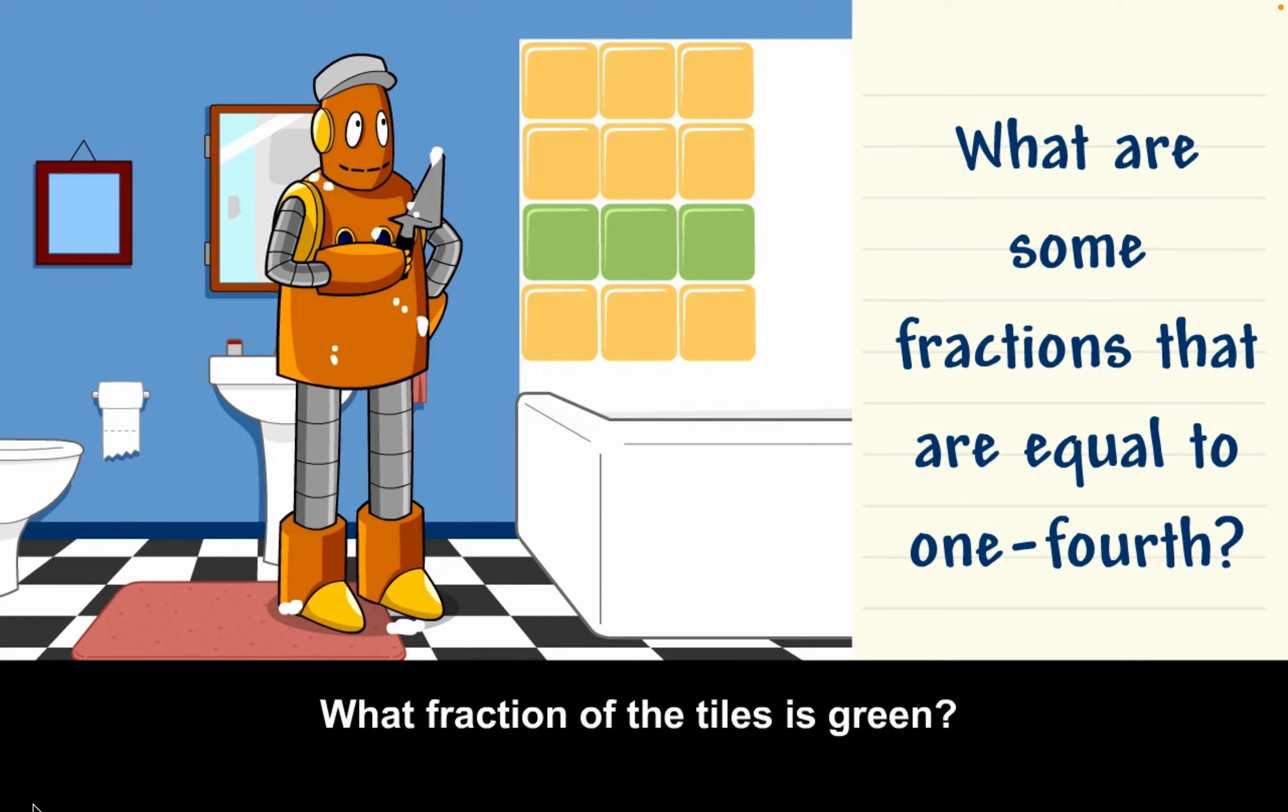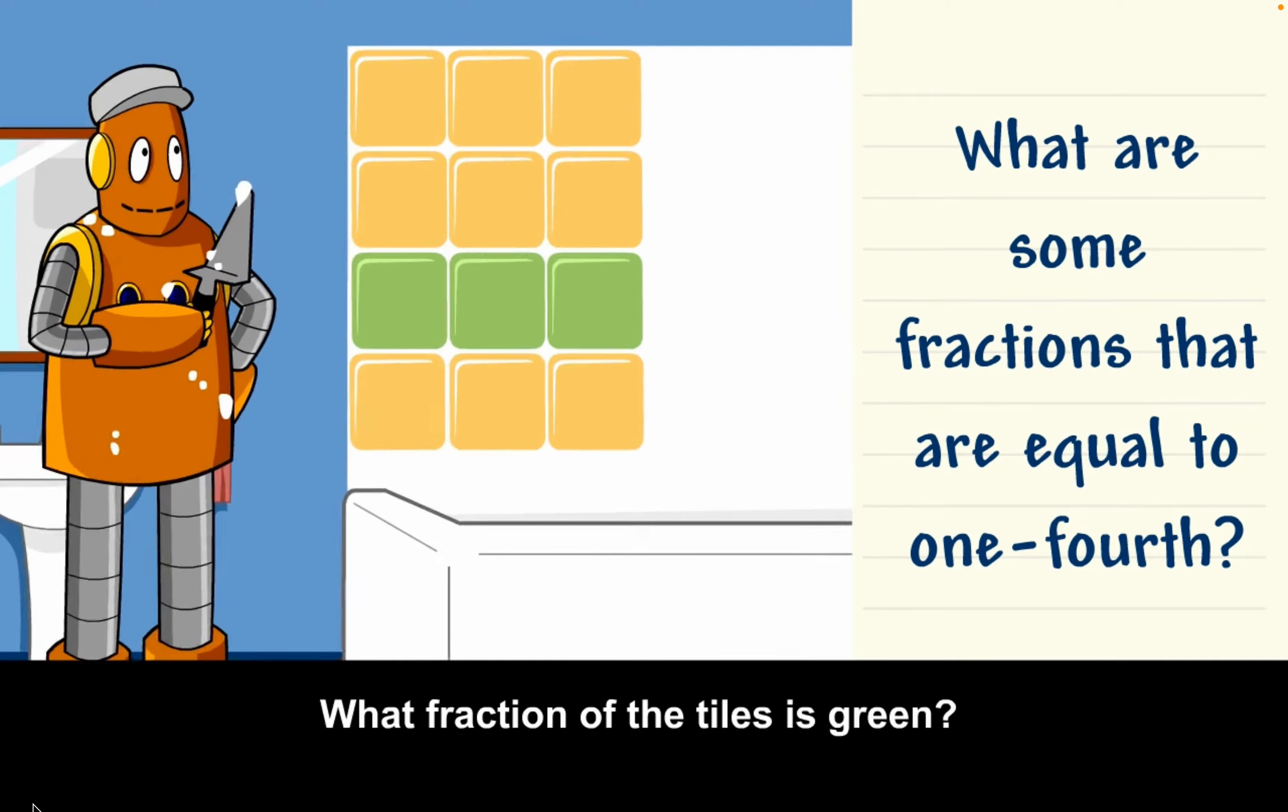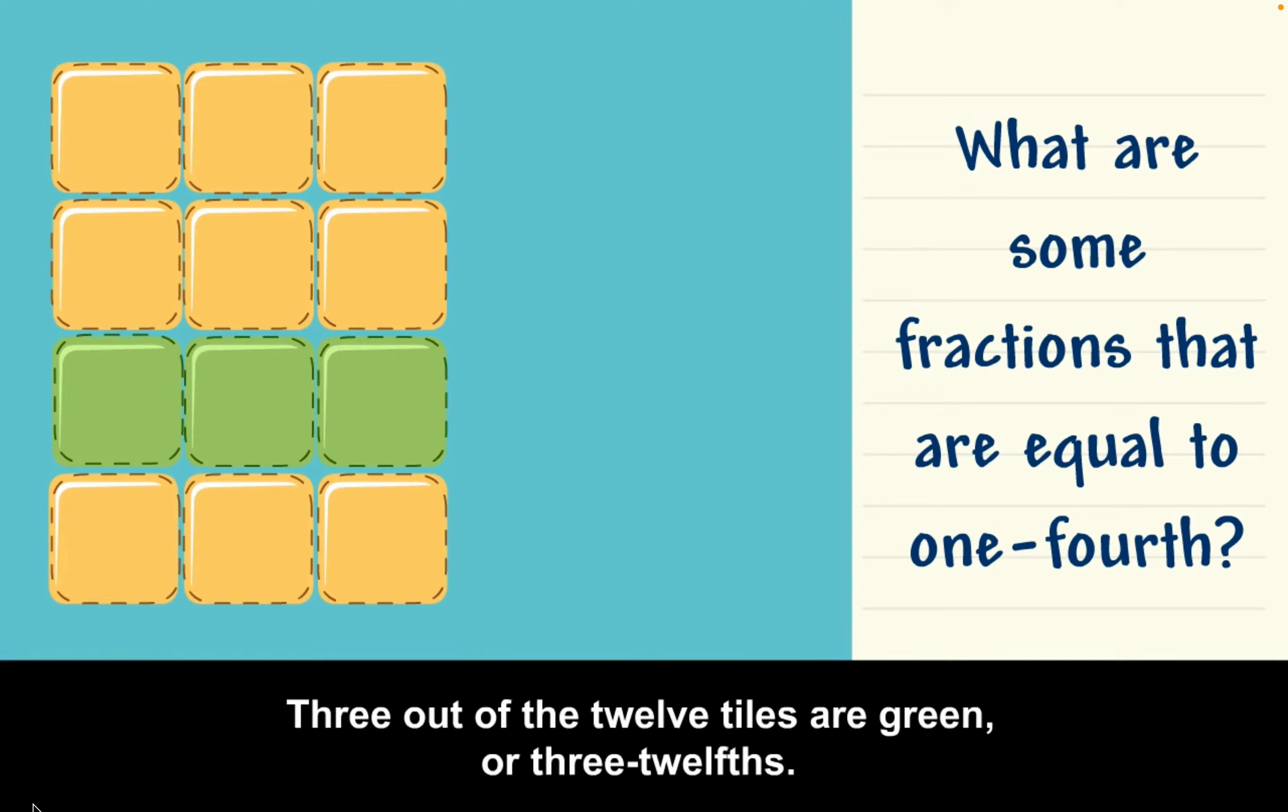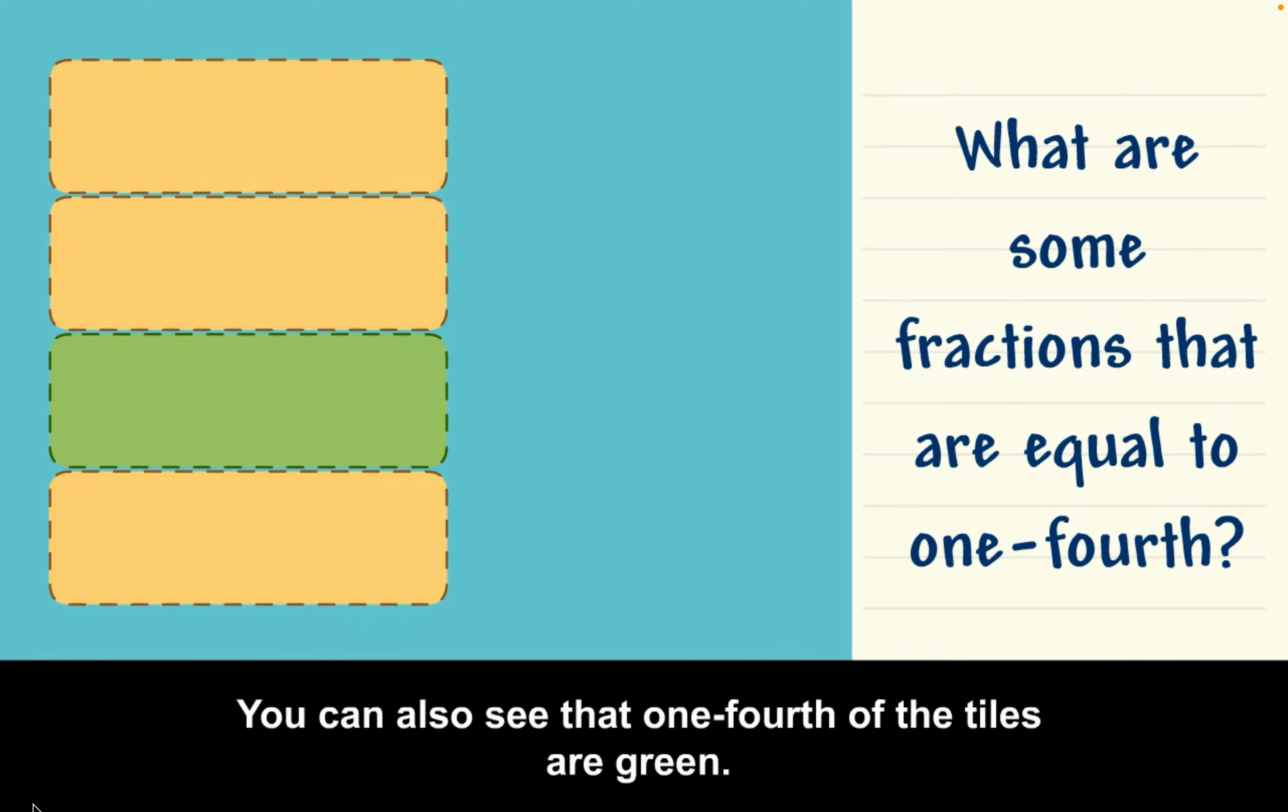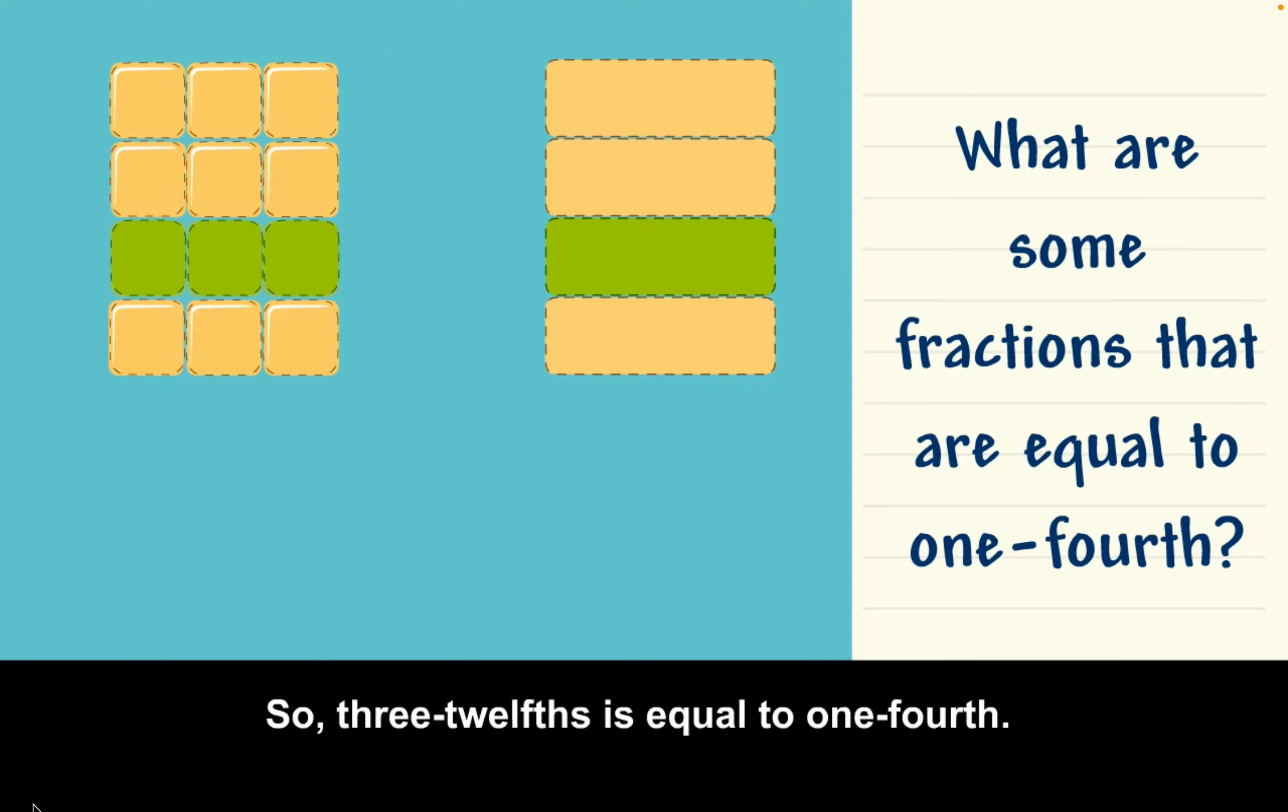What fraction of the tiles is green? Three out of the twelve tiles are green, or three-twelfths. You can also see that one-fourth of the tiles are green. So, three-twelfths is equal to one-fourth.